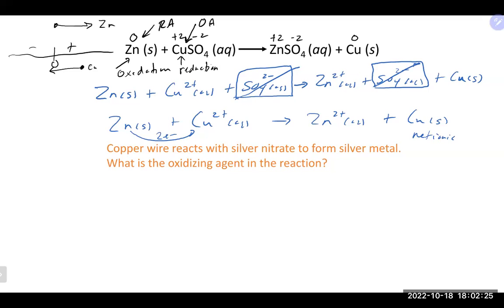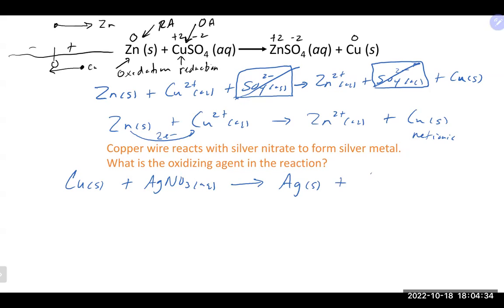Now let's work out this problem: copper wire reacts with silver nitrate to form silver metal. What is the oxidizing agent? Note: the common charge on copper when oxidized is +2. Copper wire is solid copper with a zero oxidation state. It reacts with silver nitrate — AgNO₃, where nitrates are always soluble. The products are silver metal and copper(II) nitrate, balancing with a coefficient of 2 on silver nitrate.